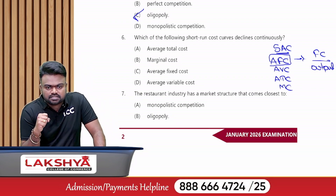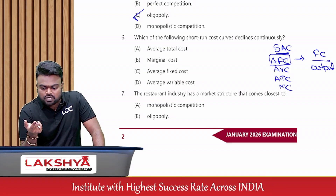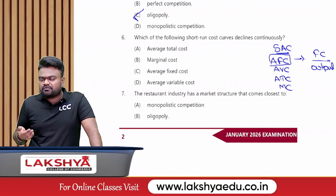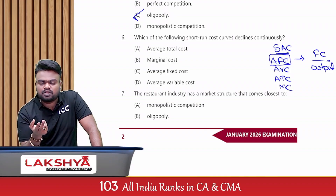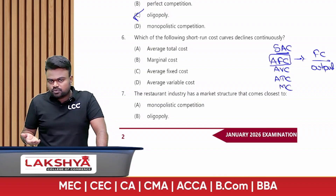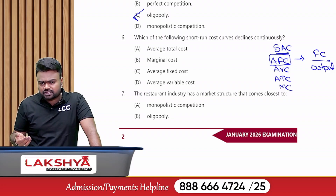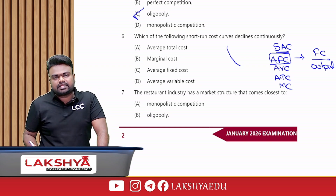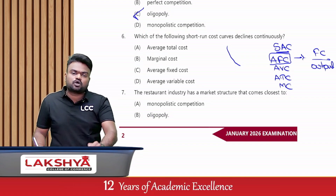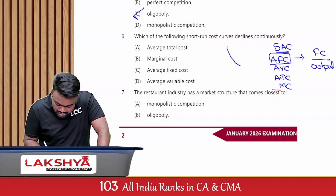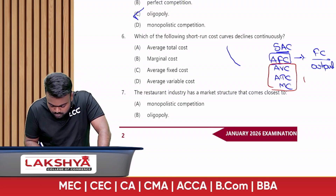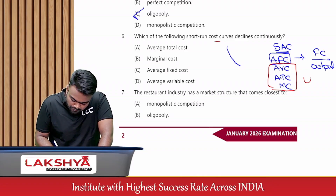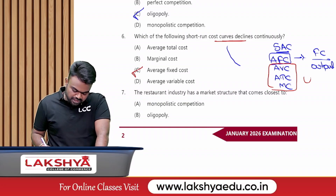For example, if rent for a classroom is 1 lakh rupees: with 1 student, AFC = 1 lakh; with 2 students, AFC = 50,000; with 3 students, AFC = 33,333. So as the number of students increases, AFC always declines. The other three curves (AVC, ATC, MC) are all U-shaped — they first decrease then increase. The answer is average fixed cost.